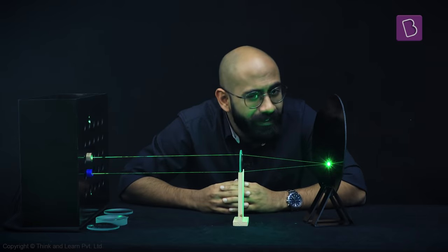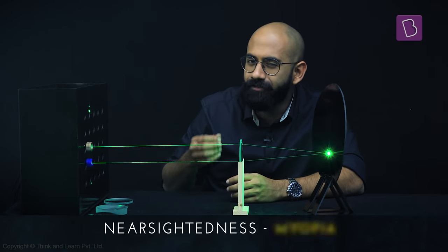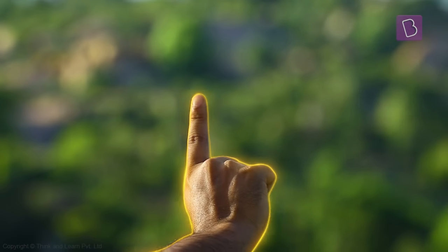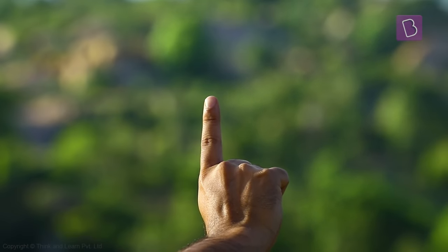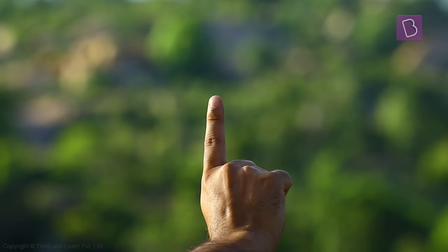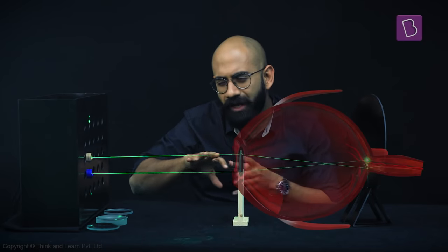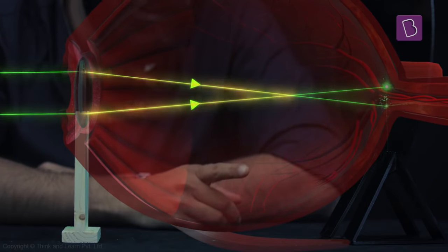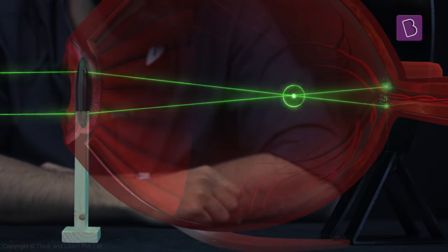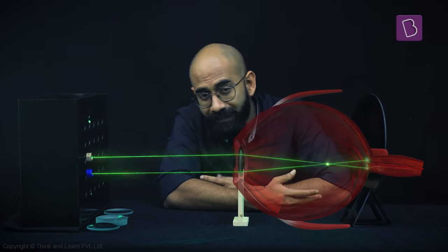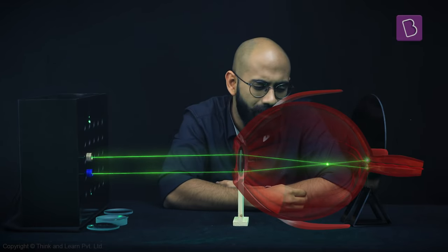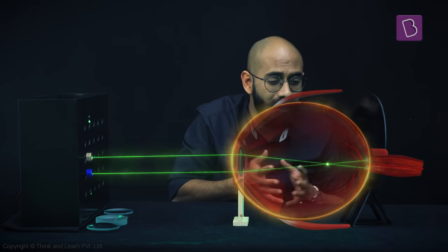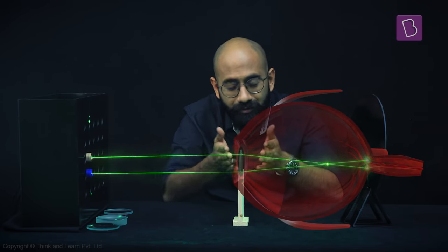And the most common defect is called nearsightedness or myopia. In this case, the person can see objects that are close by clearly, but far away objects appear blurry to them. When this person looks at objects that are far off, those rays get converged to a point in front of the retina. Like this. And therefore, he ends up seeing a blurry image. Now this can happen for a variety of reasons. Maybe the eyeball itself is too large or there's some kind of issue with the eye lens.